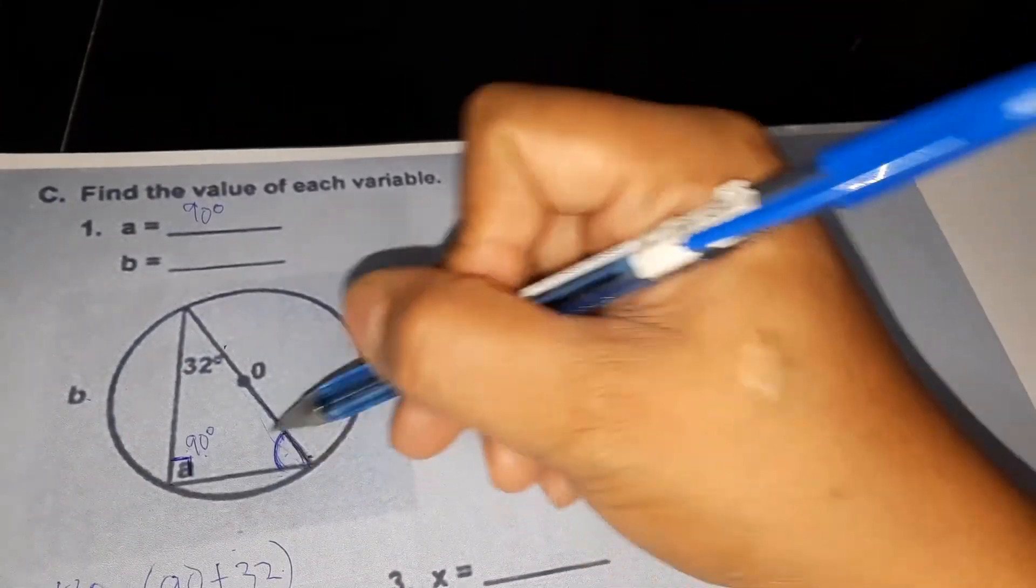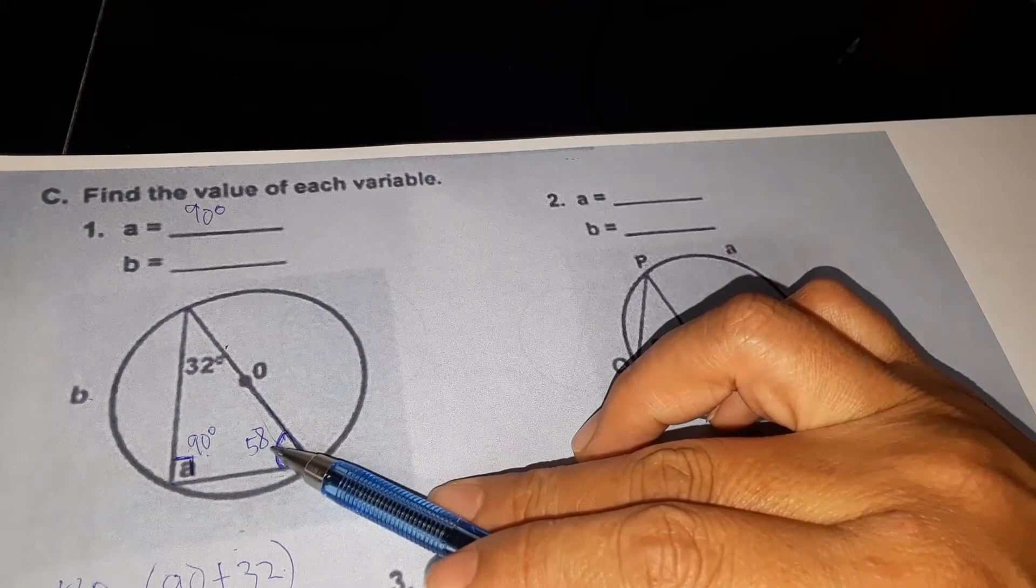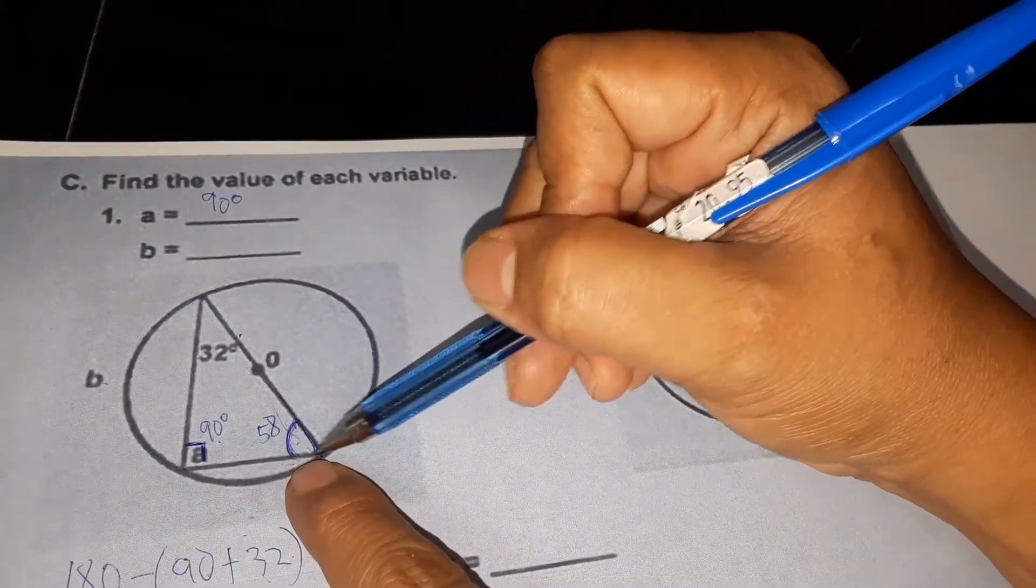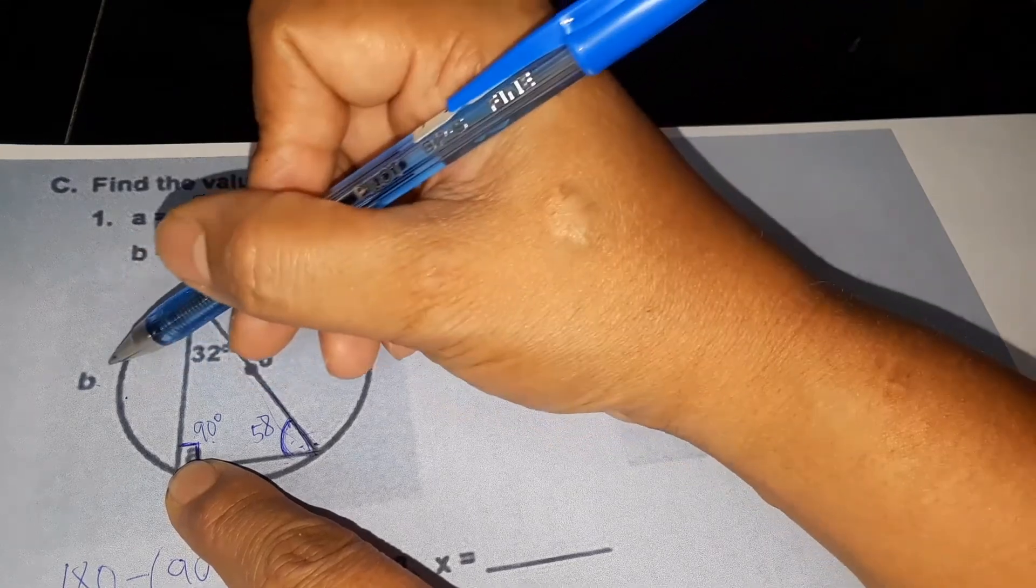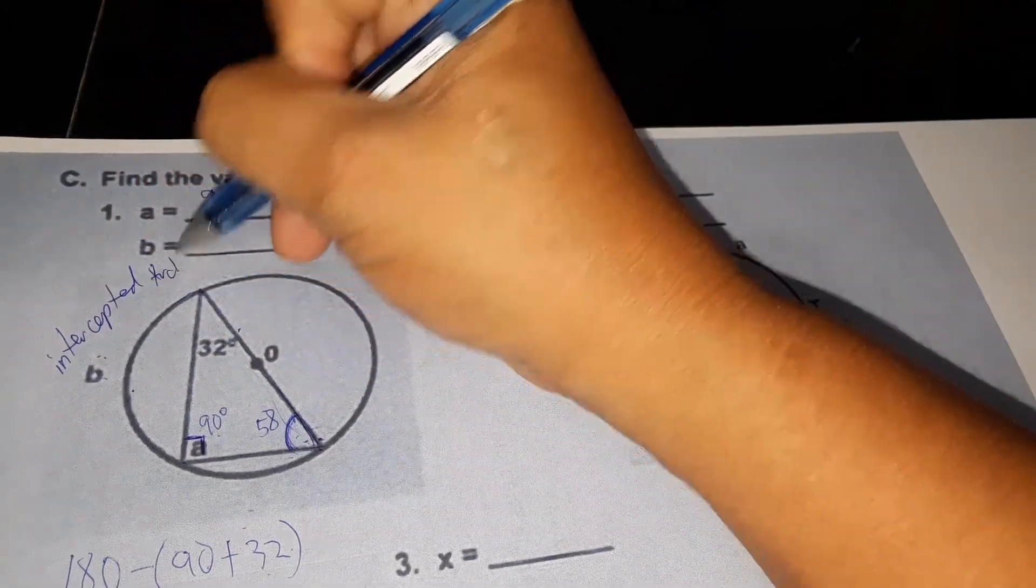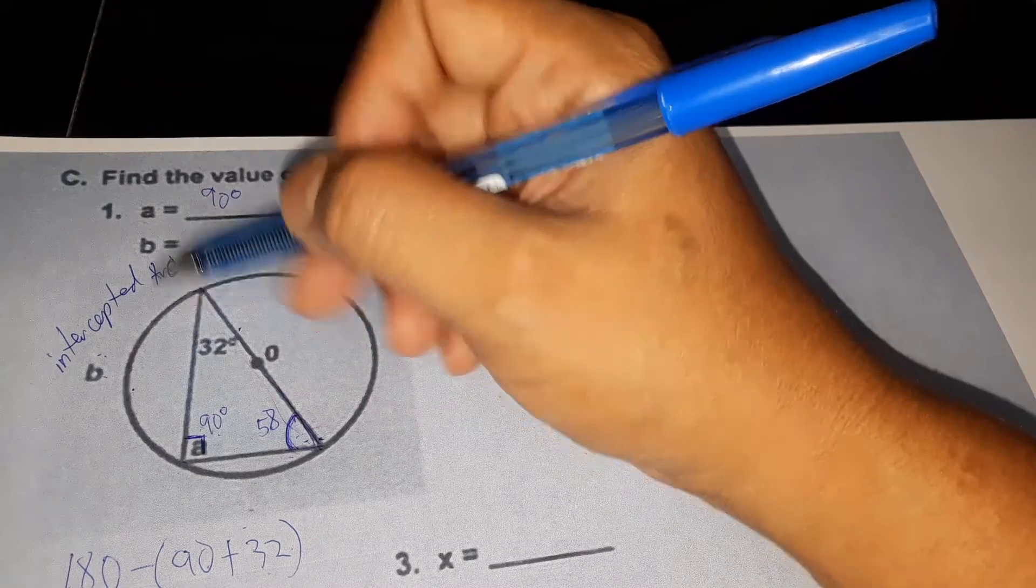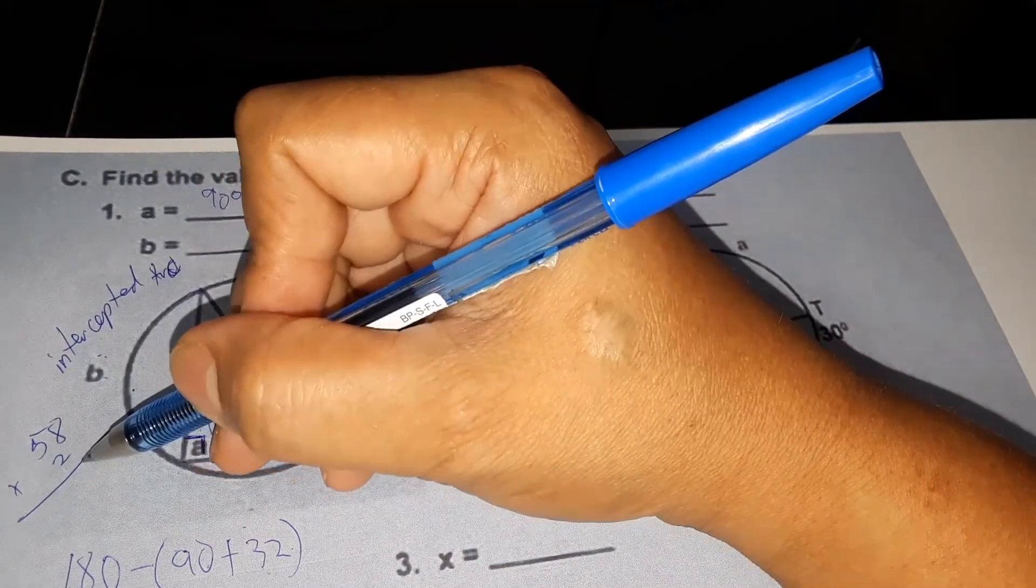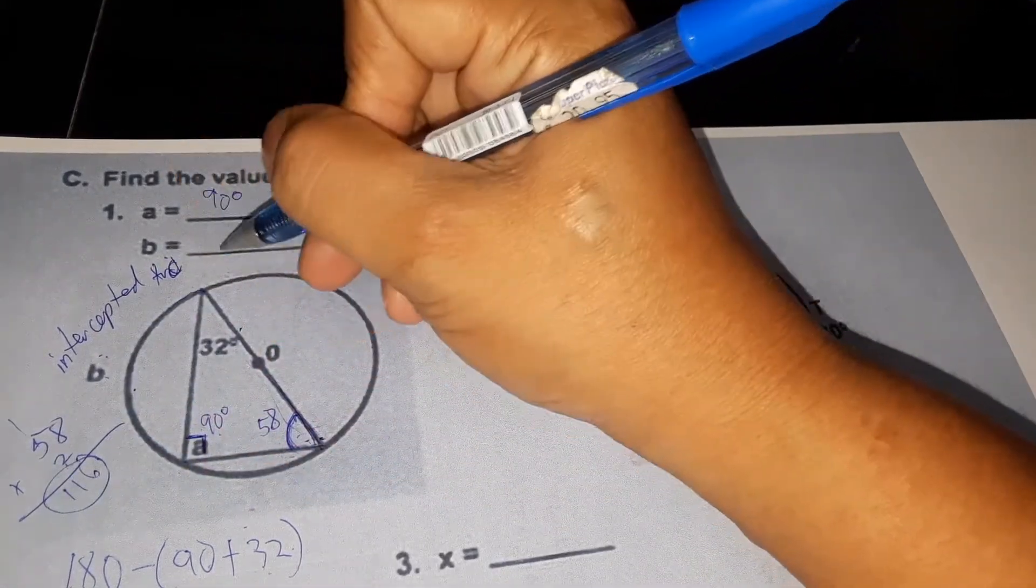So this angle is 58 degrees. If the inscribed angle is 58, what is the intercepted arc? The endpoints of the two sides opposite this angle form the intercepted arc. So our b is the intercepted arc. If 58 is the inscribed angle, then the intercepted arc is times 2. So 58 times 2, we have 8 times 2 is 16, carry 1, 5 times 2 is 10 plus 1 equals 11. So we have 116 for our b.